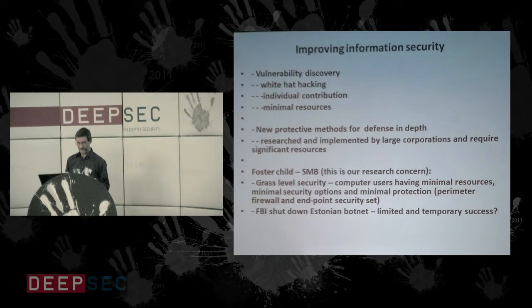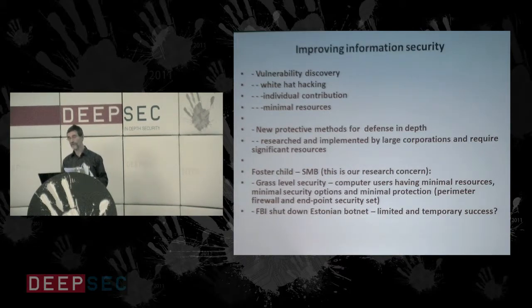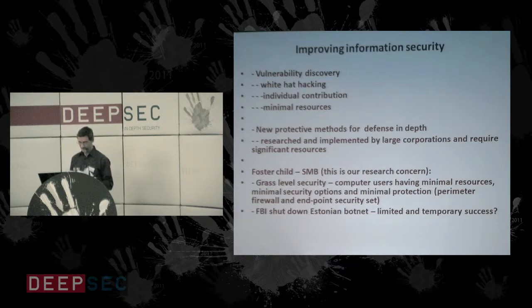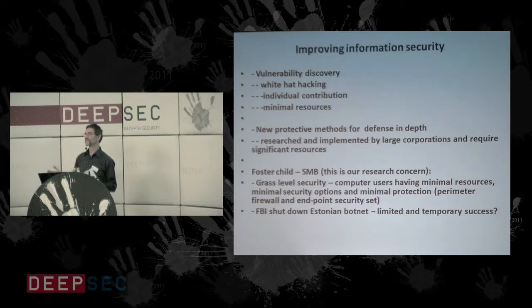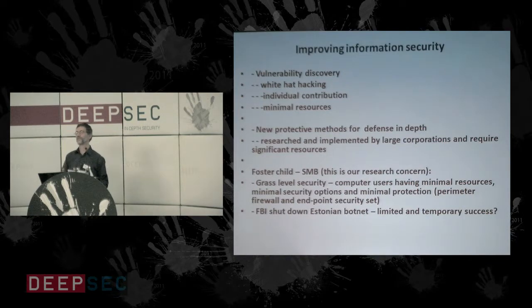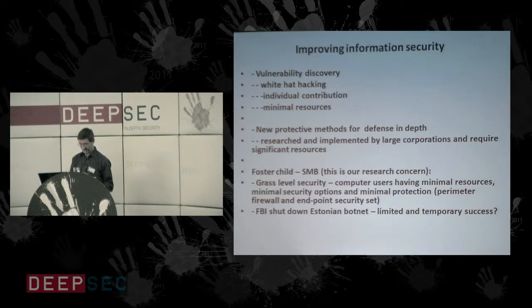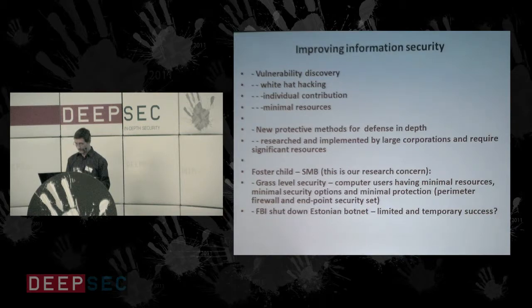We present three ways of information security improvement. Vulnerability discovery can be done by an individual and requires mostly just personal drive, not too many resources. New information protection methods require significant resources and are intended for large corporations, not small businesses or individuals — companies like Symantec, Trend Micro, et cetera. Grass-level security involves computer users having minimal resources, minimal security options, and as a result, minimal protection. This constitutes a collective effort by masses of computer users, where each individual has a very limited understanding of information security and is frequently forced to improve security by various laws and regulations.